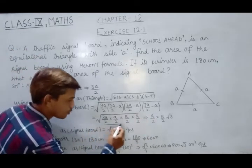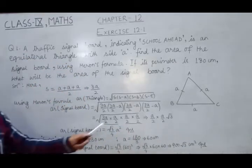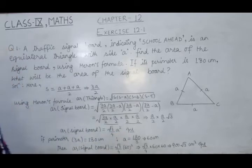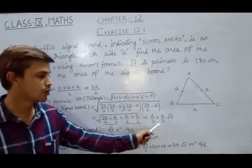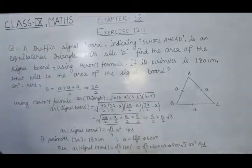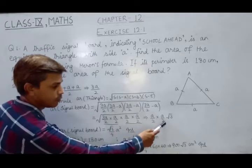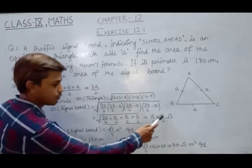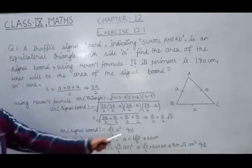Here, you could observe that we have 2 pairs of a upon 2 into a upon 2. That's why from every pair, we could take this a upon 2 out of square root. So it becomes a upon 2 into a upon 2, remaining root 3. So the area of signal board, we have root 3 upon 4 into a square. That's the first answer.